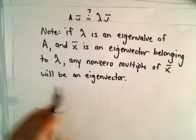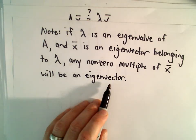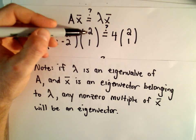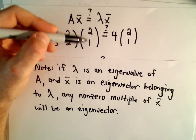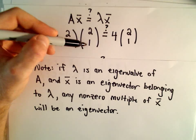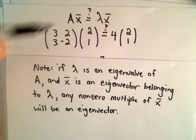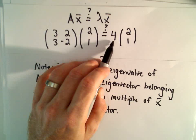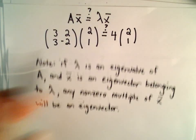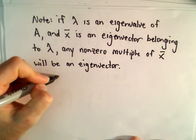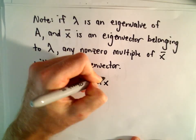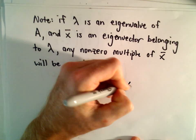Any non-zero multiple of x will be an eigenvector as well. So it turns out that since 2 and 1 was an eigenvector, we can take any non-zero multiple. So 4 and 2, 20 and 10, 200 and 100, all of those values would have also been eigenvectors that correspond to the eigenvalue of 4. And we can show this quickly.